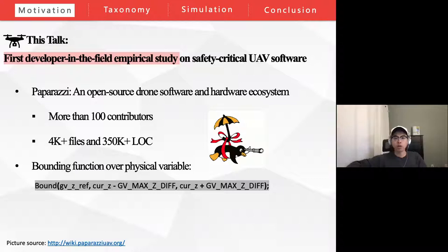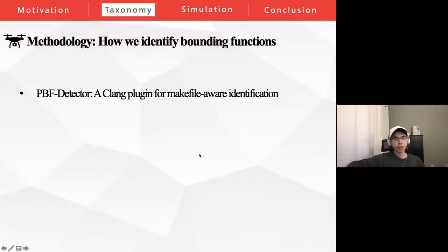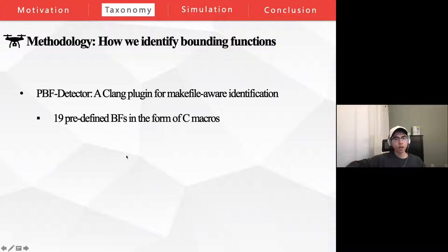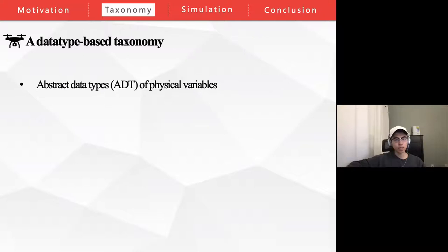We focus on how bonding functions are applied on physical variables in the paparazzi autopilot software. The function 'bound' is a bonding function, and the first argument gv_z_ref is a bounded variable. We will use their abbreviations BF and BV in the following slides. To identify BFs in the paparazzi code base, we developed a compiler pass implemented as a plugin called PBF detector, short for paparazzi bonding function detector. We manually selected 19 predefined BFs in the form of C macros by inspecting all .h files. PBF detector is macro-aware and is involved in paparazzi's hierarchical compilation with 78 CMake files distributed at various levels.